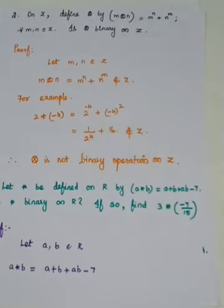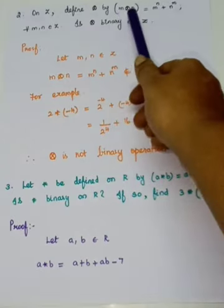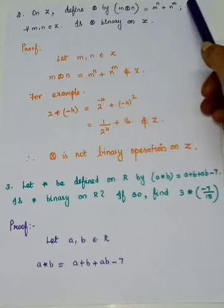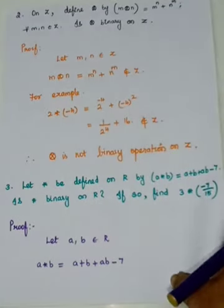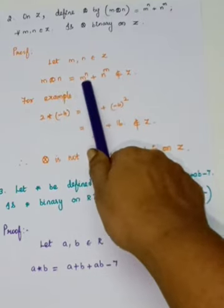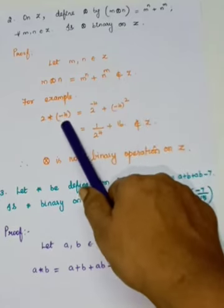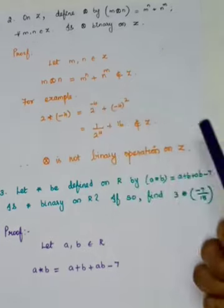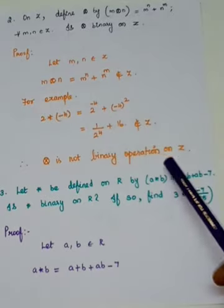Problem 2: on Z, the operation is defined as m asterisk n equals m to the power n plus n to the power m, for all m, n belonging to Z. Check whether this is a binary operation. If n is a negative number, say n equals minus 4, then you get 2 to the power minus 4, which is not an integer. So when you add the terms, the result is not an integer. Therefore, this operation is not a binary operation on Z.